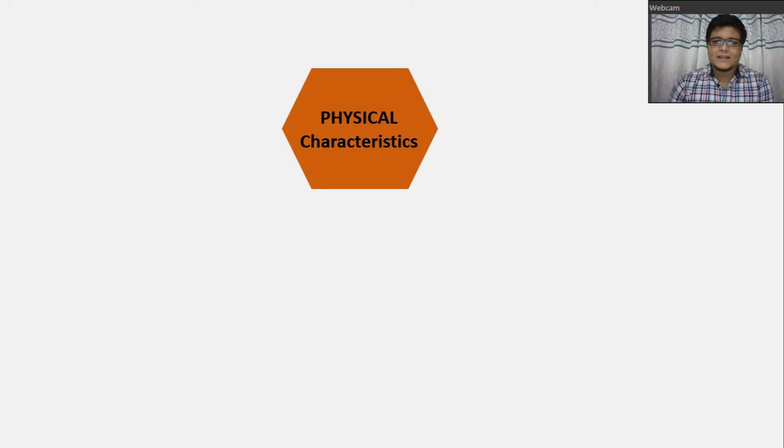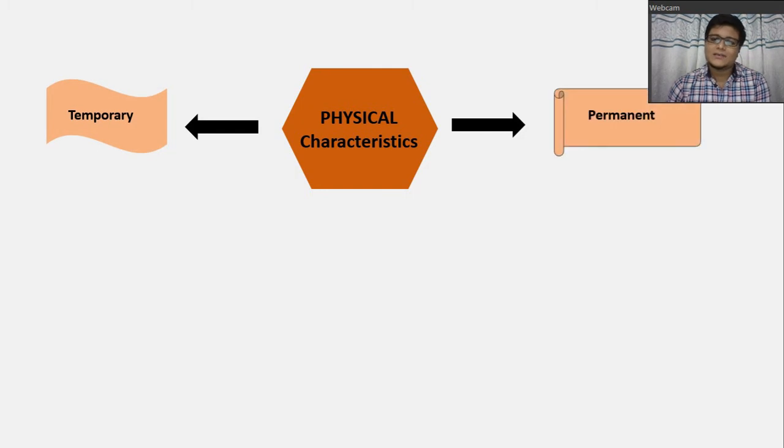So, we are starting with physical road user characteristics. So, there are two types of physical road user characteristic. One can be categorized as temporary. The other ones are permanent ones.